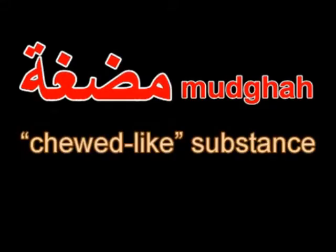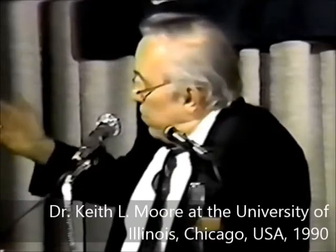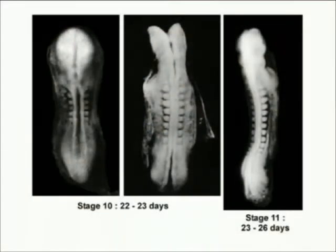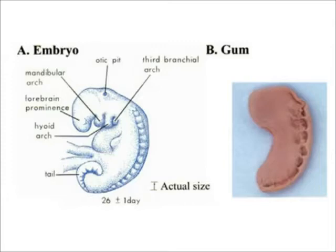The next stage is the mudga stage. When I was asked what this meant, it reminded me of an embryo at this stage. When I was told that mudga meant a chewed substance, I thought of the embryo here — you can see these little bead-like structures which we call somites. I suggested that this chewed stage could be referring to these somites, which have the appearance of a chewed substance. If you take a piece of gum and bite into it, you're left with teeth marks which look very much like this.